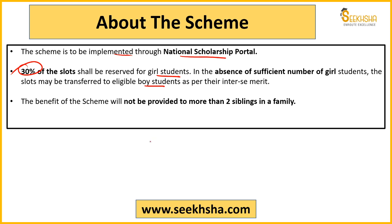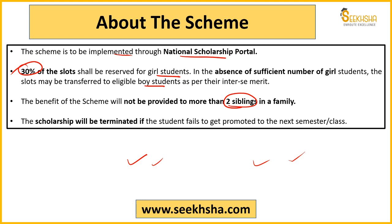Another provision to remember: the benefit of this scheme will be provided to only two siblings per family, meaning only two children. If parents have a third child, they will not get the benefit if two have already received it. Any two children can get the benefit — if there are four children, still only two will get it. It is the parents' wish which children they enroll under this scheme.